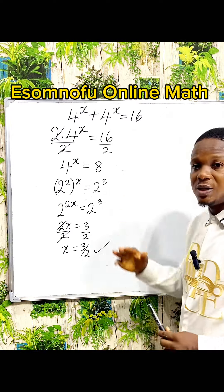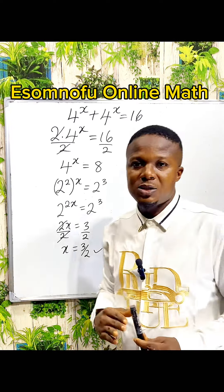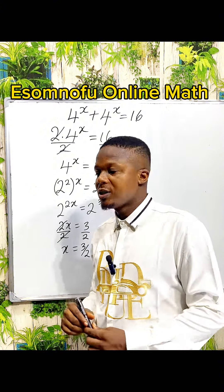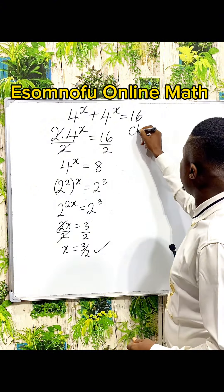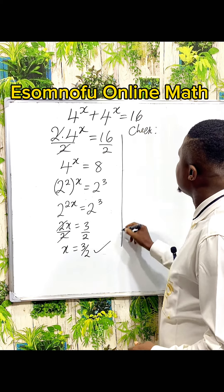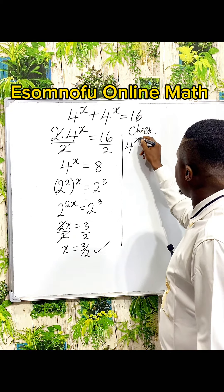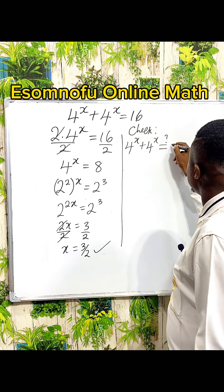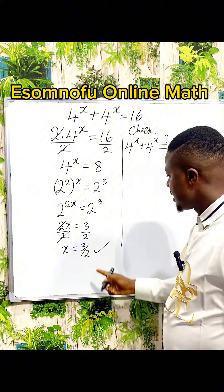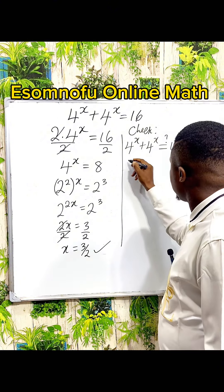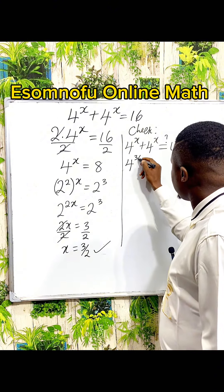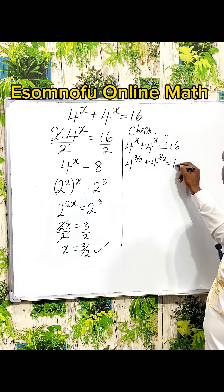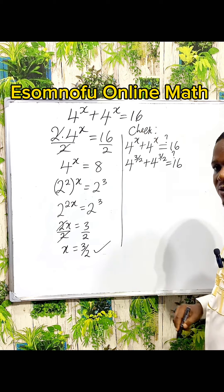Now sometimes, after solving equations, it is nice to test so that you see whether what you've solved is correct. So let us test to check our answer. We have 4 power x plus 4 power x, and we want to check if this is actually equal to 16. Now x is 3 over 2, so that would be 4 power 3 over 2 plus 4 power 3 over 2. Can this give us 16?